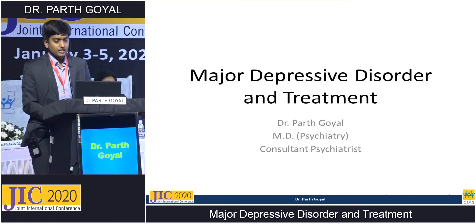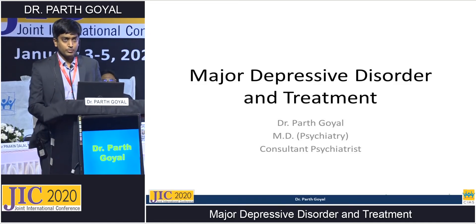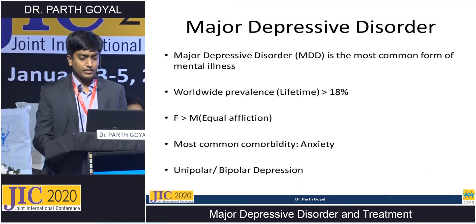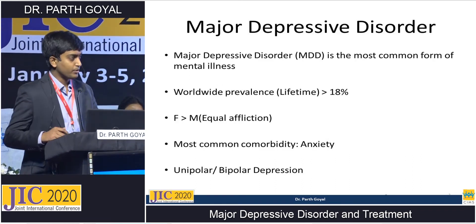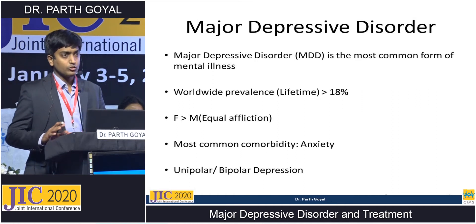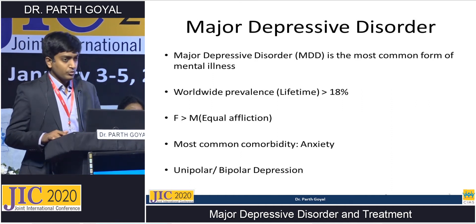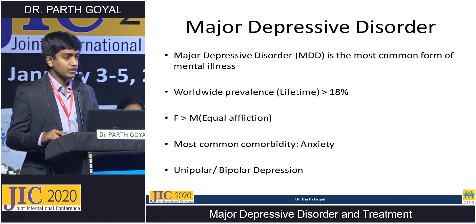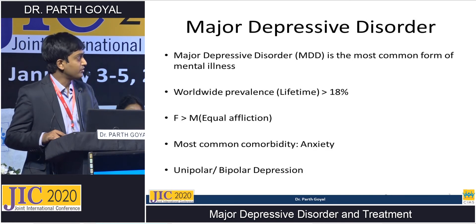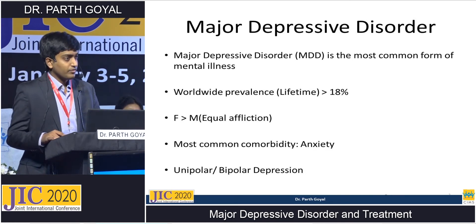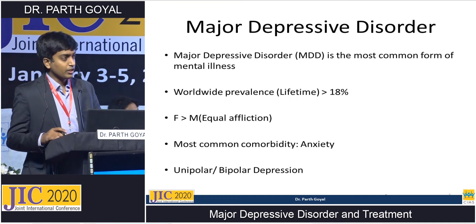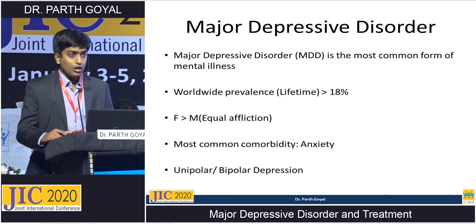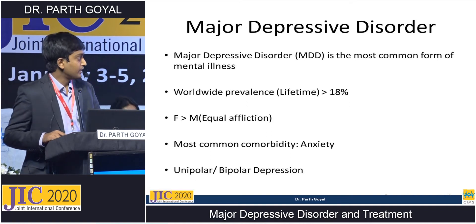I'll be talking today about major depressive disorders through a case-based approach and their treatment options. To start off, I'll give a basic overview of depression — just to point out the scope of the problem. It is the most common form of mental illness. The worldwide lifetime prevalence of major depressive disorder is around 18%, which is very high. Females are more afflicted than males, although some argue equal affliction between both sexes. The most common comorbidity in patients with depression is anxiety.